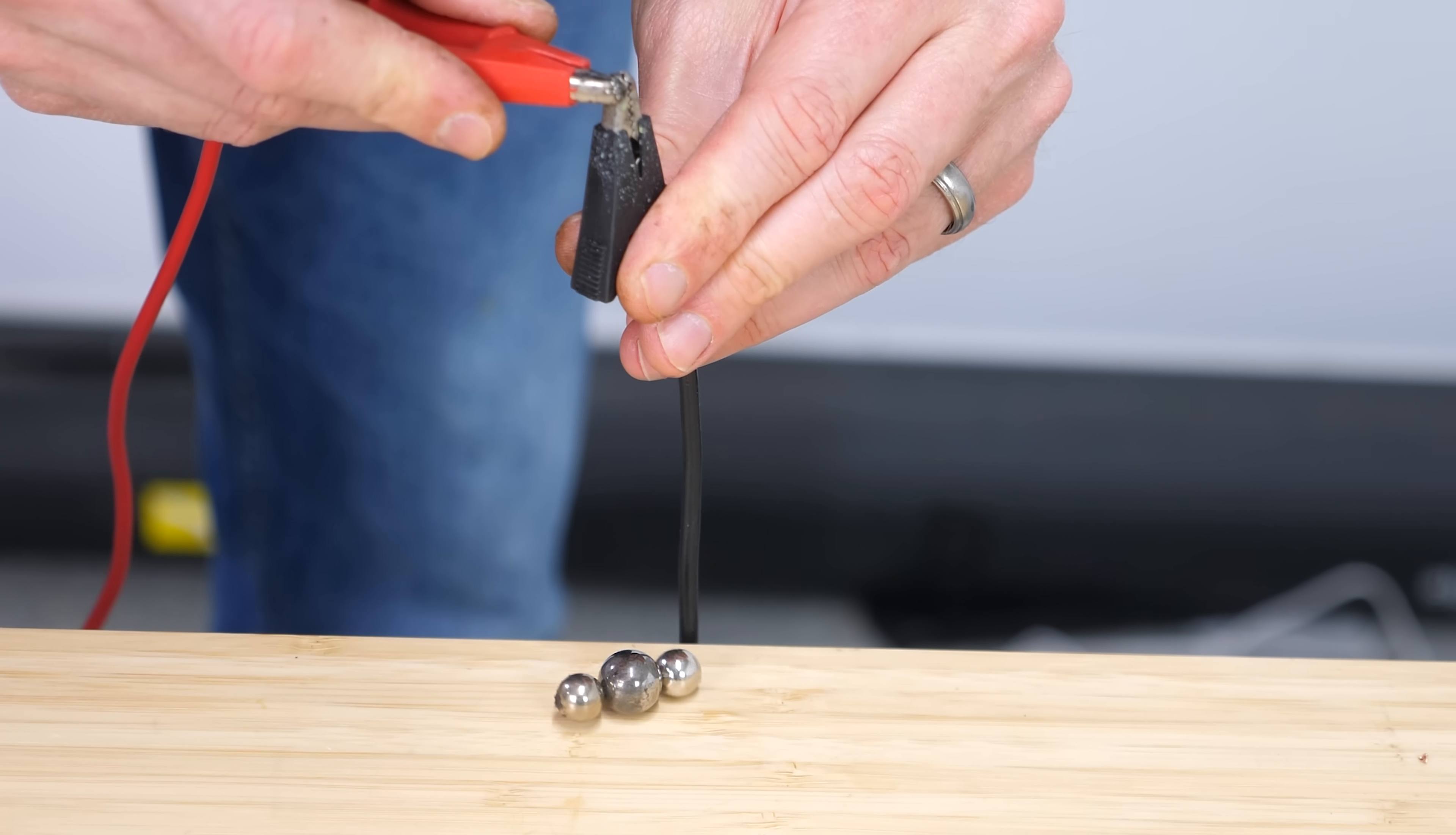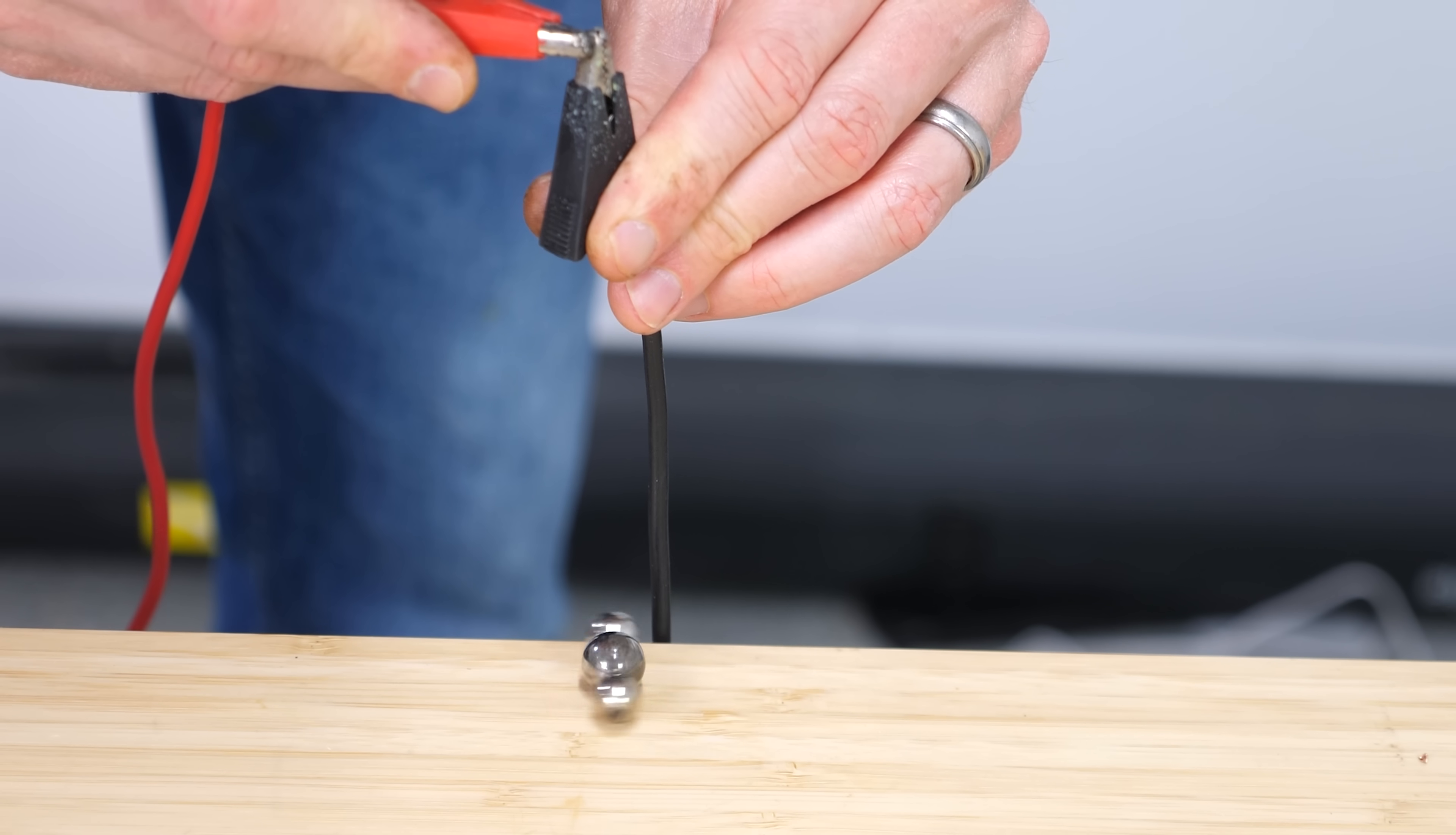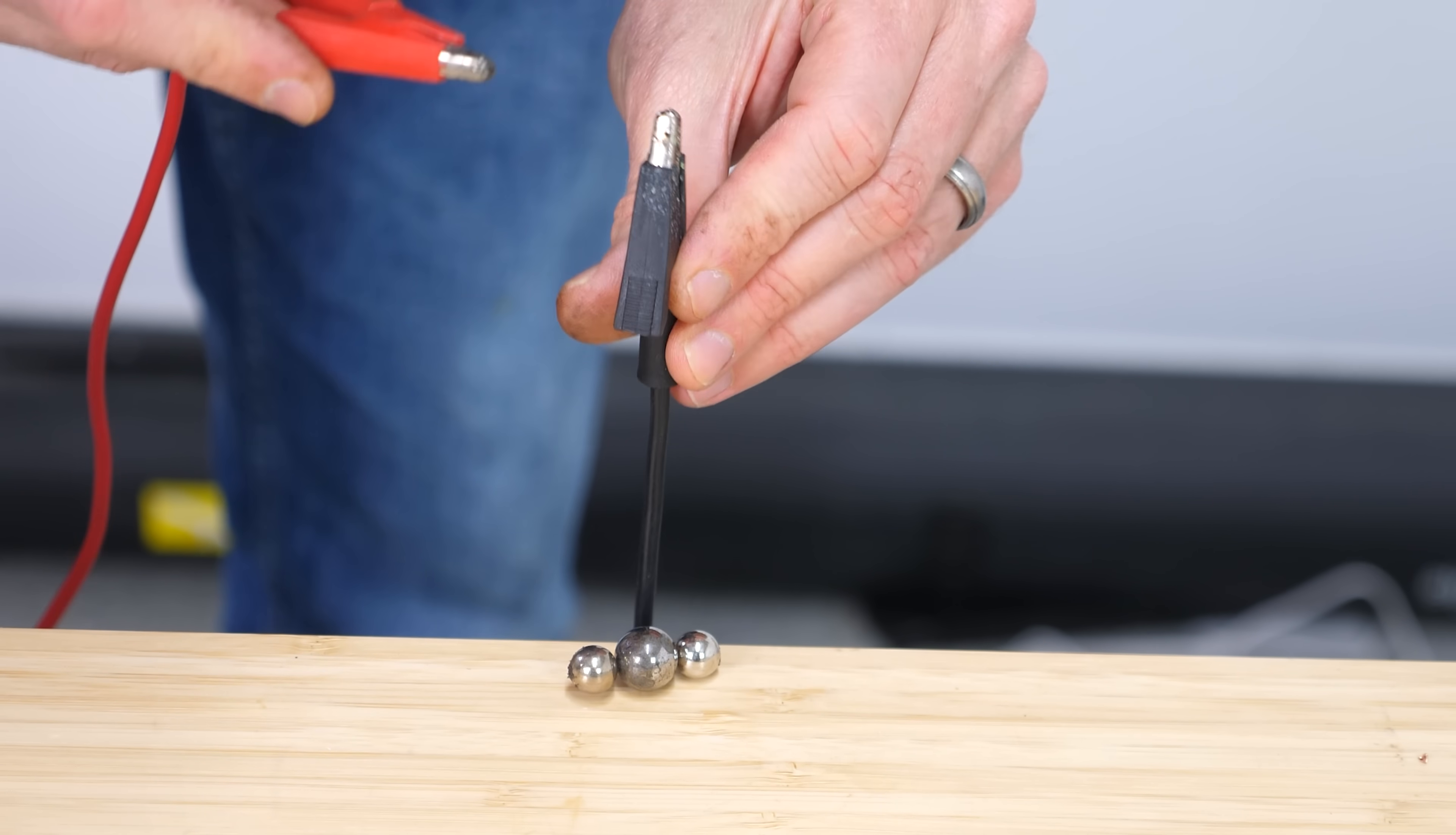Since 1820, scientists have known that when you move a charged particle, like electrons flowing through this wire here, it generates a magnetic field. This means that electric and magnetic fields are really two perspectives of the same force, which we unify into one force called the electromagnetic force.